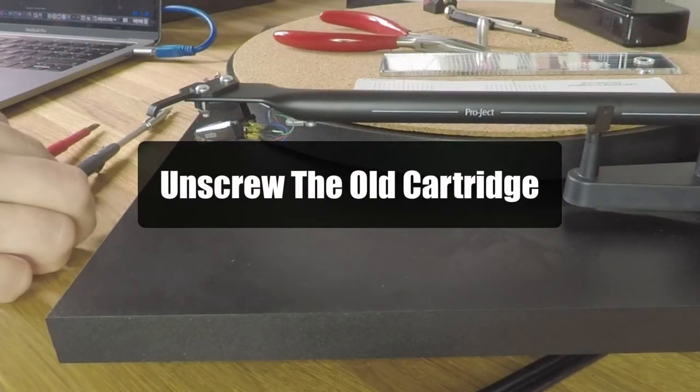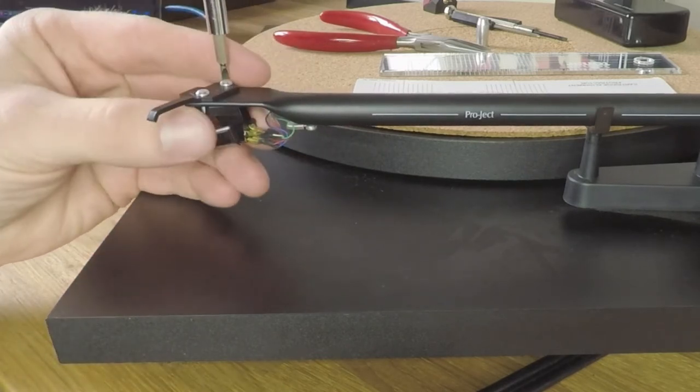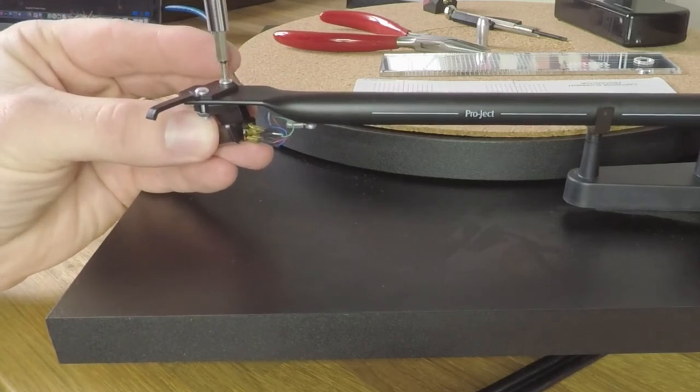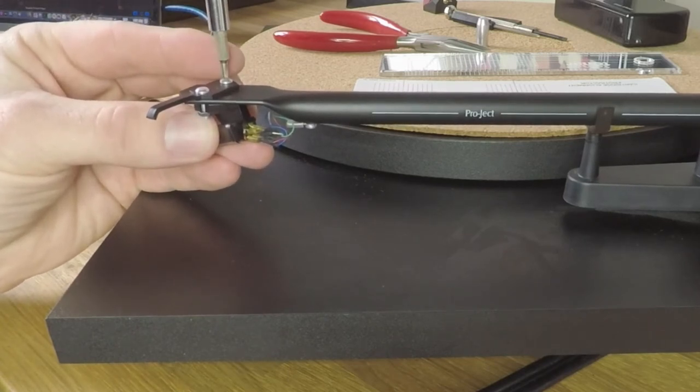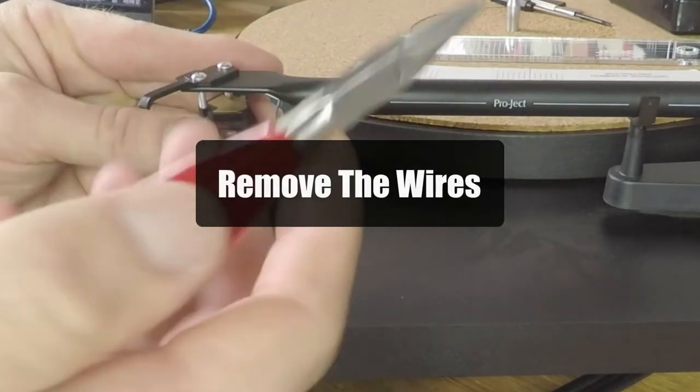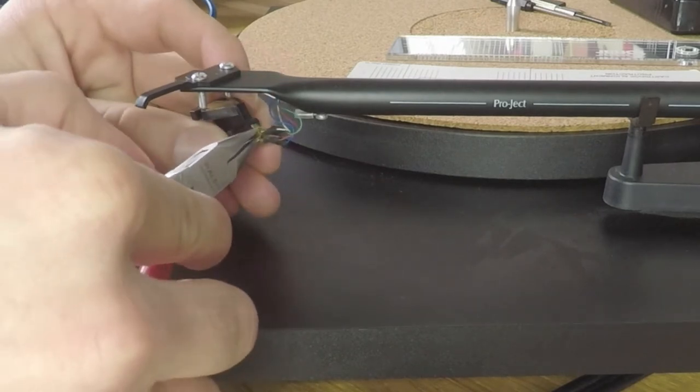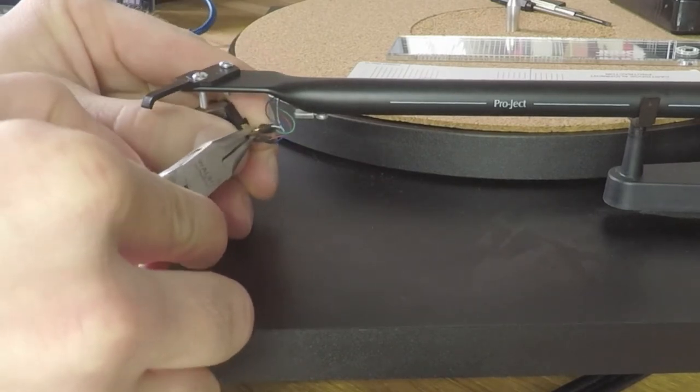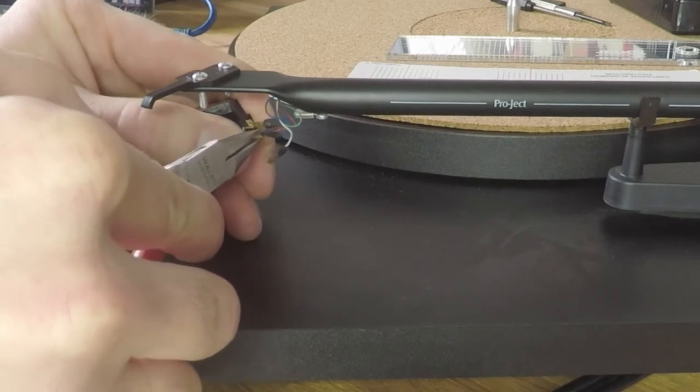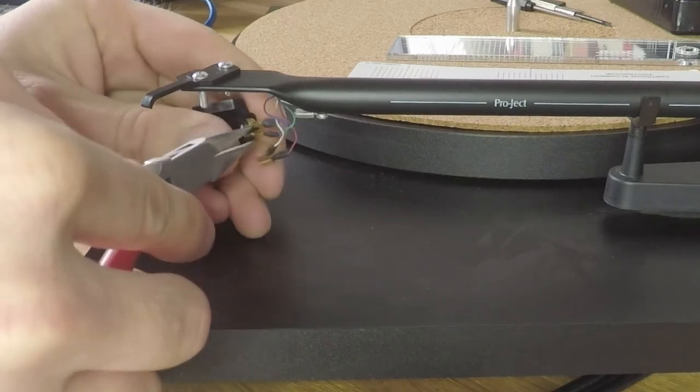Start by unscrewing the cartridge from the head shell, and you'll want to add or drop the stylus guard at this point before you get going as well, because if you're going to keep the cartridge or stylus for any reason, then we want to preserve it and protect that stylus. With the cartridge now removed from its head shell, we can gently remove the wires using the long-nose pliers. Be very careful with these, because they're very delicate. Always pull the wires from the metal tips. Never pull it from the wire itself, as you'll almost certainly break the wires.